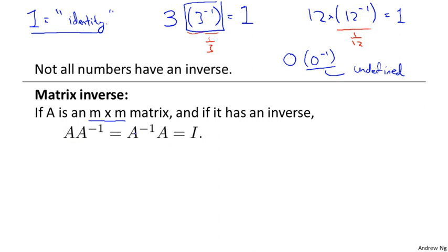Then the inverse is going to be written A to the minus one, and A times this inverse, A to the minus one, is going to equal to A inverse times A, which is going to give us back the identity matrix.